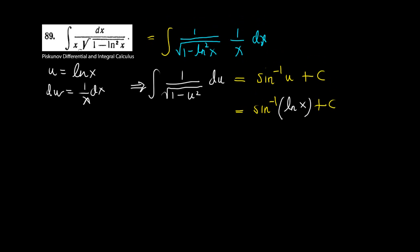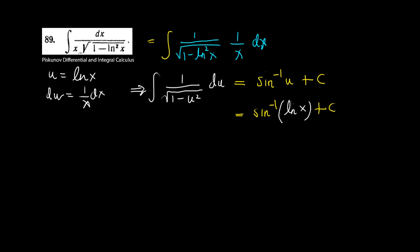And you can check it for yourself that this is indeed the right answer, because if you differentiate this expression using the chain rule, then you'll find that sine inverse derivative is 1 over the square root of 1 minus natural log of x squared, and then you go inside using the chain rule and take the derivative of natural log of x, which comes out to be 1 over x.